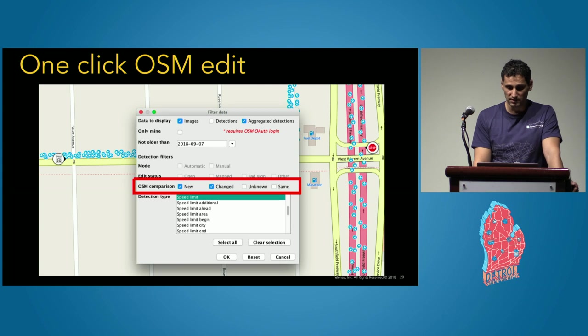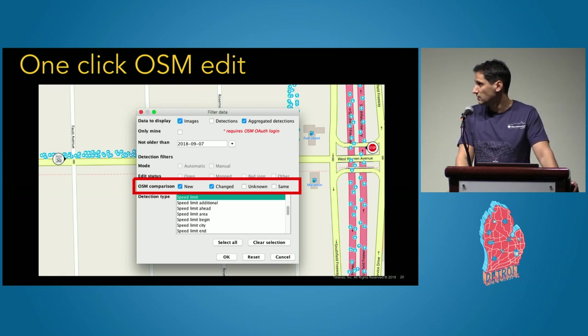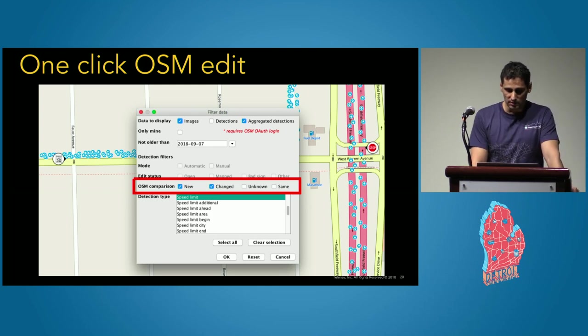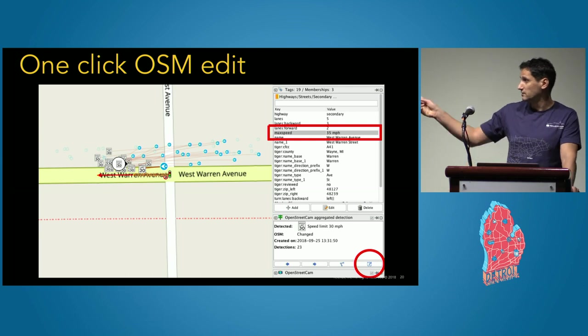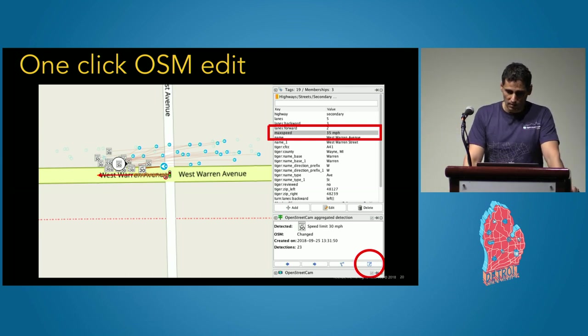The first step here will be to filter in JOSM only new or changed detections. In our example, we have speed limit 40. We can also note that in the top right side of the filter window, we checked as being visible only aggregated detections. Also, it's important to see that we have detected a speed limit 40 and in OSM there is a tag of max speed 35 which is different. This can be visualized on the top right quadrant in red. In this case, the end user will visually check the aggregated detection, taking a look also to the corresponding pictures. And if everything is okay, they'll integrate the new information in OSM by clicking on the new button highlighted in the red ellipse.